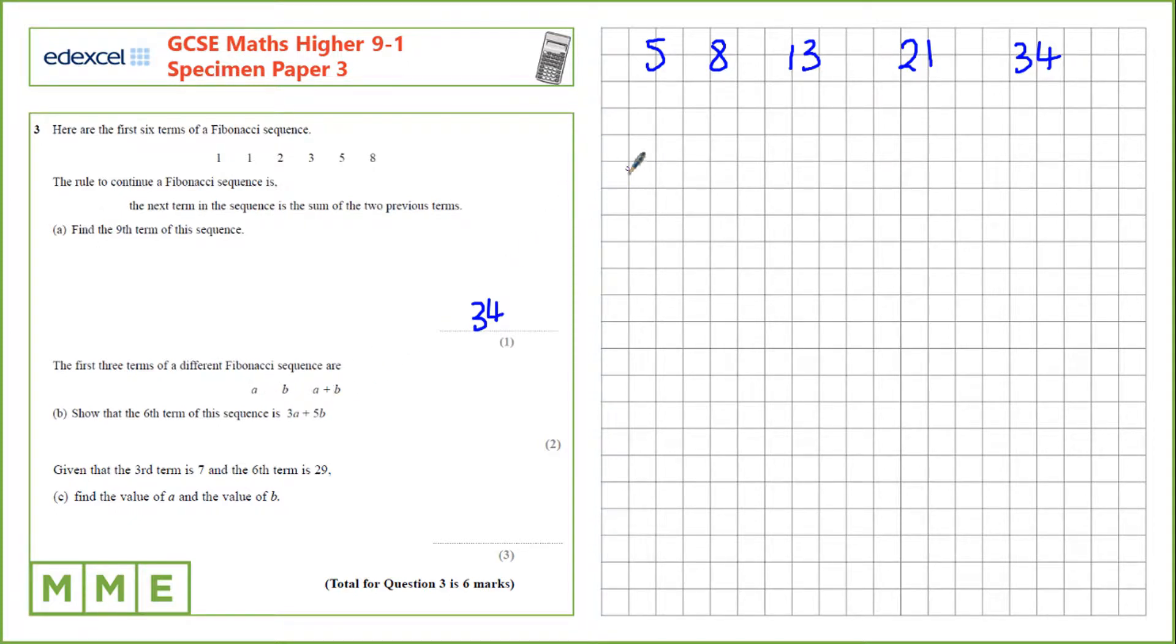b plus a plus b is a plus 2b. Next, a plus b plus a plus 2b is 2 lots of a plus 3 lots of b. This is term 5, term 4. And term 6, we need to add these two together, so a plus 2a is 3a, and 2b plus 3b is 5b.